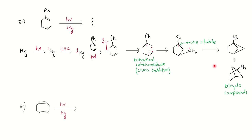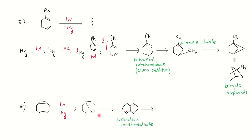Similarly for cyclooctene having two non-conjugated double bonds in the presence of mercury, cross addition will occur and you can show the product formation via a biradical intermediate. The key point to remember: whenever you have two non-conjugated double bonds, in the absence of mercury show simple 2+2 addition, and when mercury is given show cross addition.